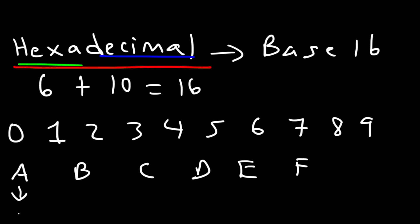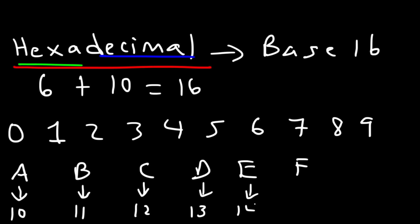A corresponds to ten in the decimal system. B corresponds to 11, C is 12, D is 13, E is 14, and F is 15. So that's a total of 16 numbers including zero.